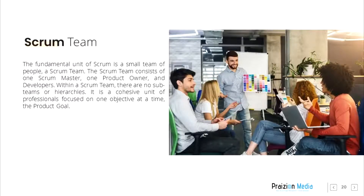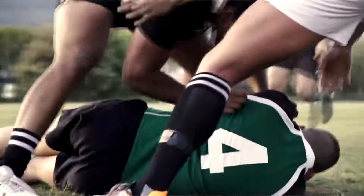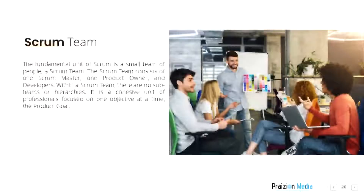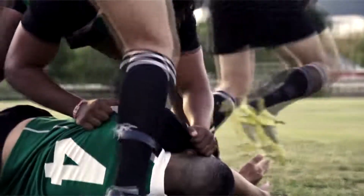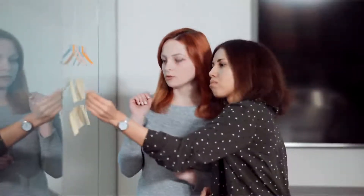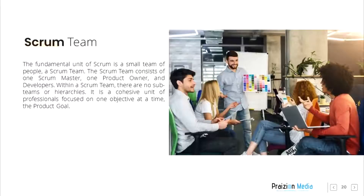The fundamental unit of Scrum is a small team of people, a Scrum team. The Scrum team consists of one Scrum master, one product owner, and developers. Within a Scrum team, there are no sub-teams or hierarchies. It is a cohesive unit of professionals focused on one objective at a time, the product goal.